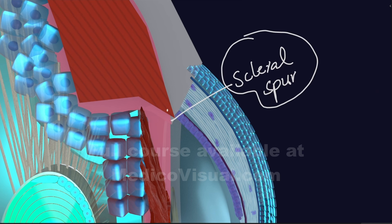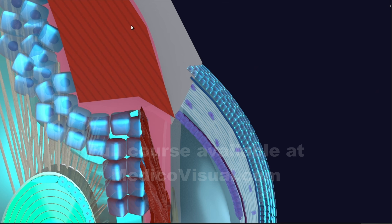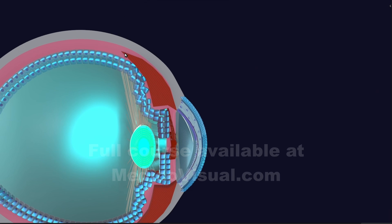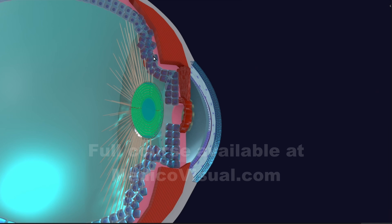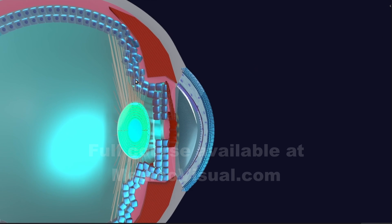Anteriorly, the ciliary muscle attaches with the scleral spur and is almost fixed there — it is tightly attached. This part cannot move; only the distal part of the ciliary muscle can move. Because this proximal part is fixed, when the ciliary muscle contracts it will move in this direction. As it moves, it will also take the overlying ciliary process along with it, and the attachment of the zonular fibers with the ciliary muscle will also move with that.